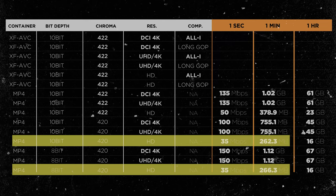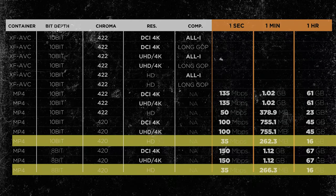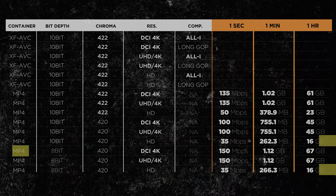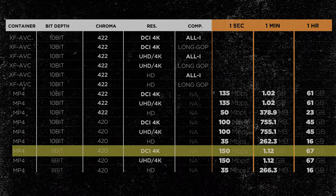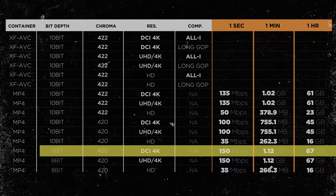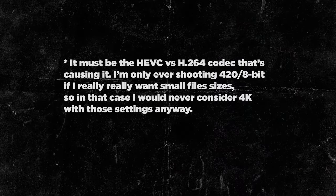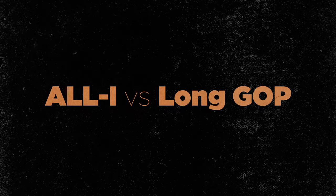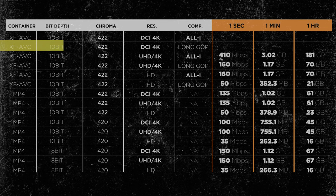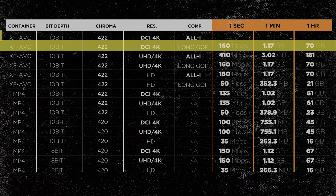Weird. With XF-AVC, Longgop and All-I have huge disparities in file sizes. If you want to go to All-I, that 70 gigs turns into 181 gigs — it more than doubles it. Is the ease of scrubbing through the edit really worth more than doubling the space on your hard drives? For me, with this machine, it's not necessary.